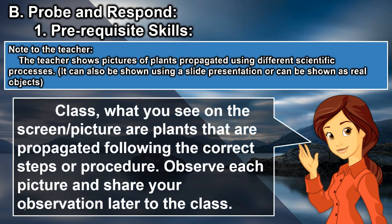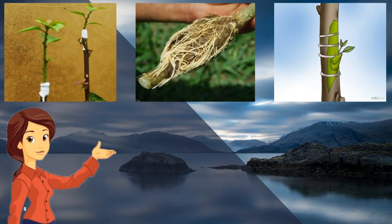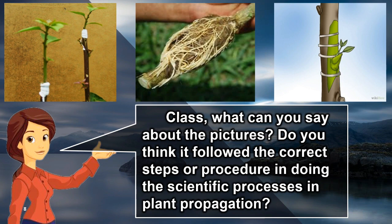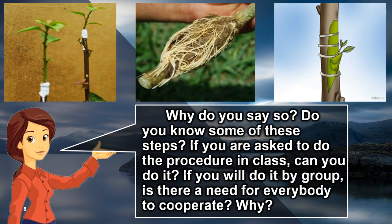Class, what you see on the screen are plants that are propagated following the correct steps or procedure. Observe each picture and share your observation with the class. What can you say about the pictures? Do you think they followed the correct steps or procedure in doing the scientific processes in plant propagation? Why do you say so? Do you know some of these steps?